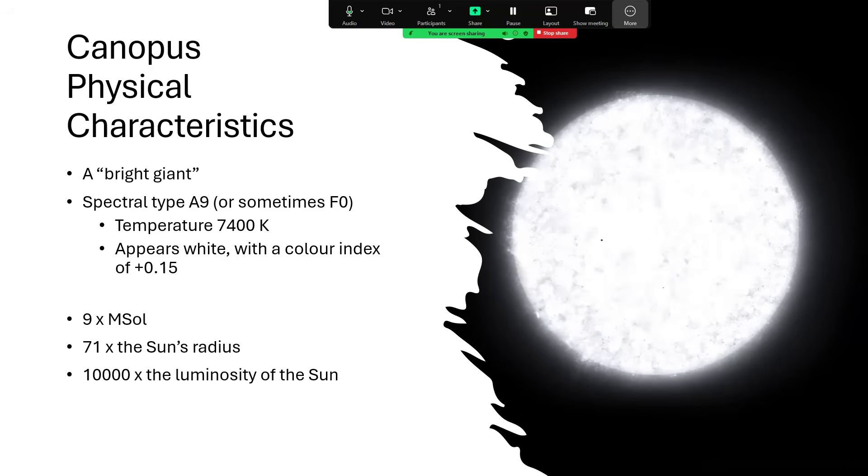And that high temperature, considerably hotter than the Sun, and the larger disk means that the light output is 10,000 times as much as our Sun. So a white star, very powerful indeed. And of course, that's why we see it as so bright at 310 light years away.